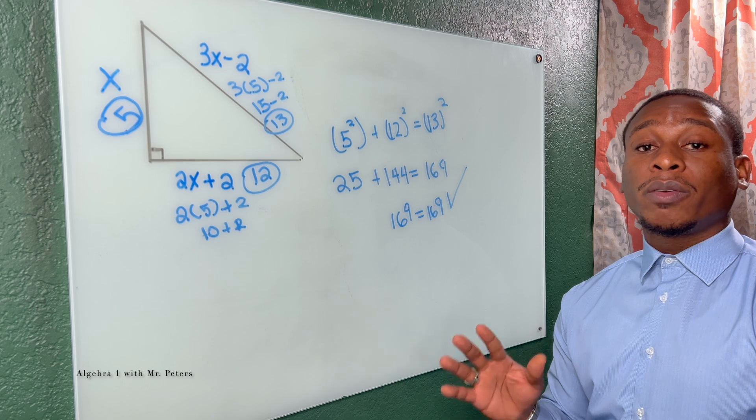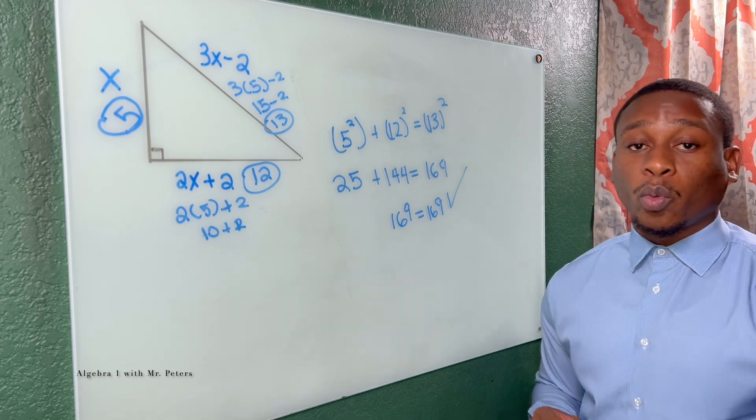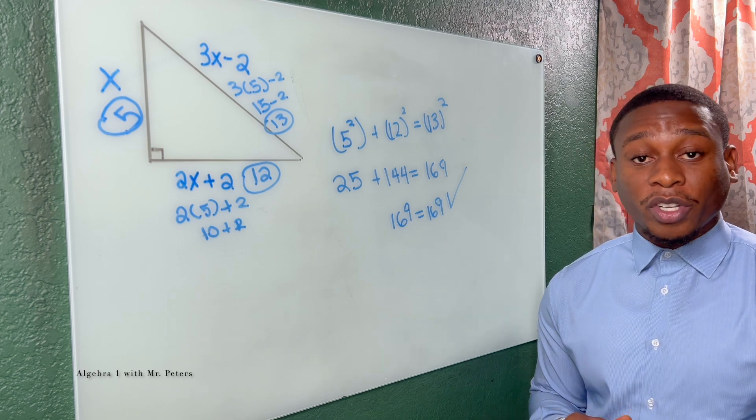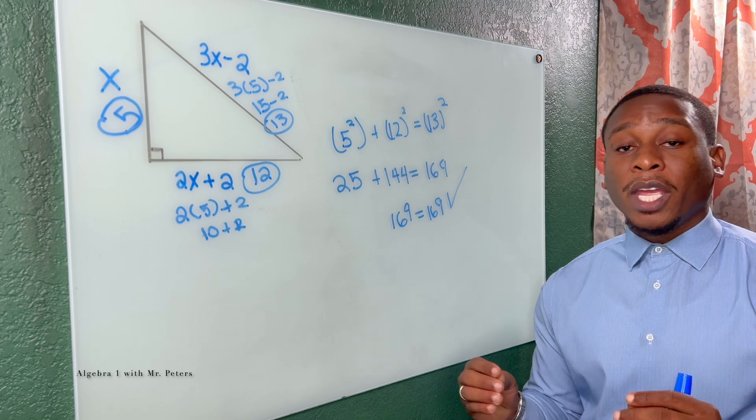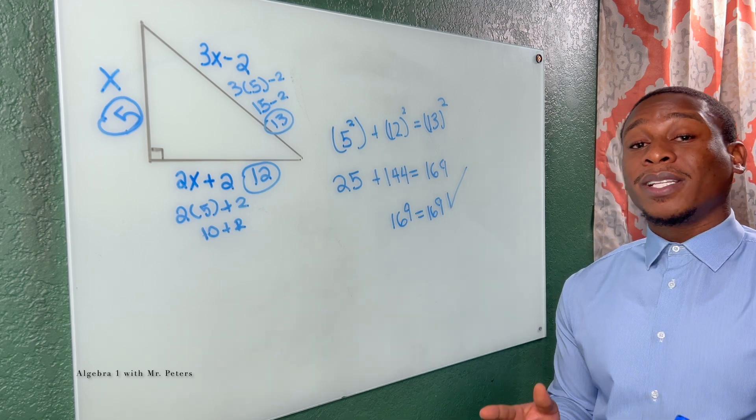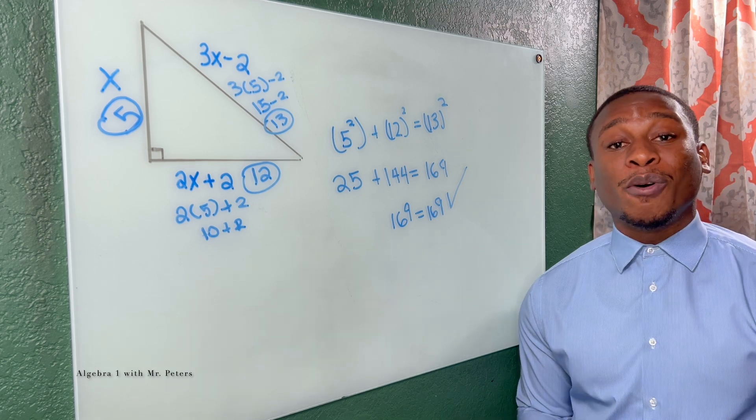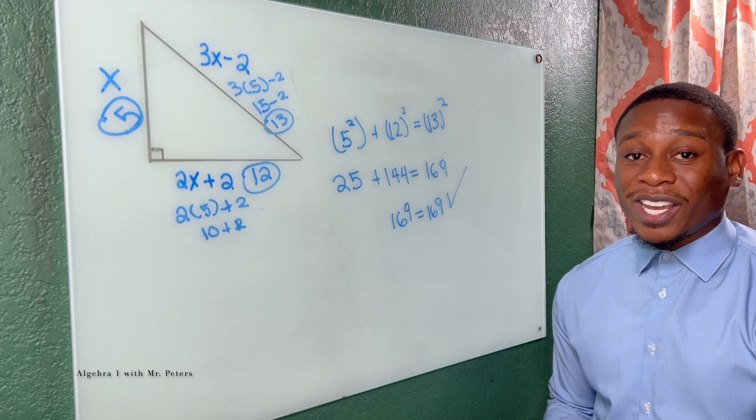So when you're dealing with Pythagorean theorem and quadratic equations, family, this is how you would solve. Don't forget about that extraneous solution or that side that may be negative. We can't have that. If this video was helpful for you, smash the like button for us, subscribe to the channel, and leave comments down below if you had questions on this video or if there's other videos you would like to see on our channel.